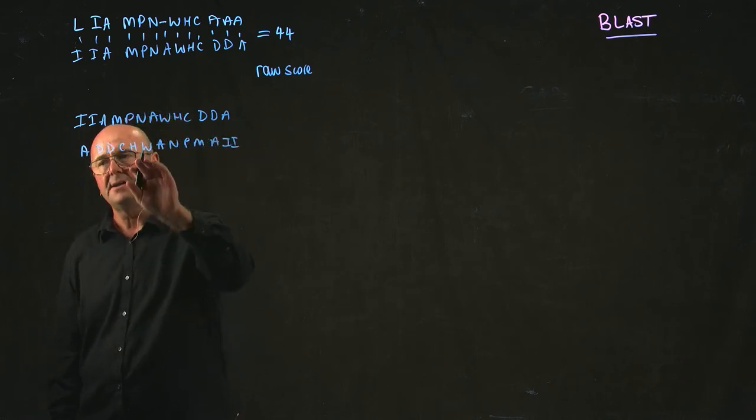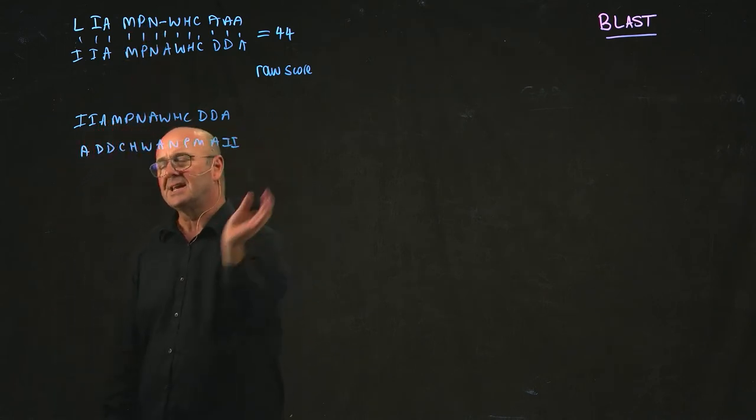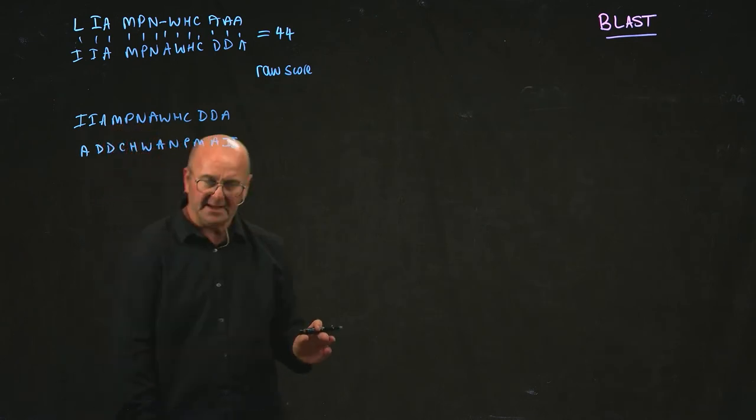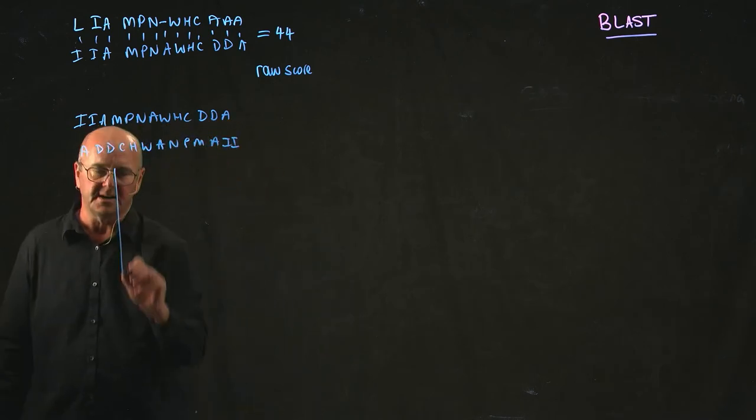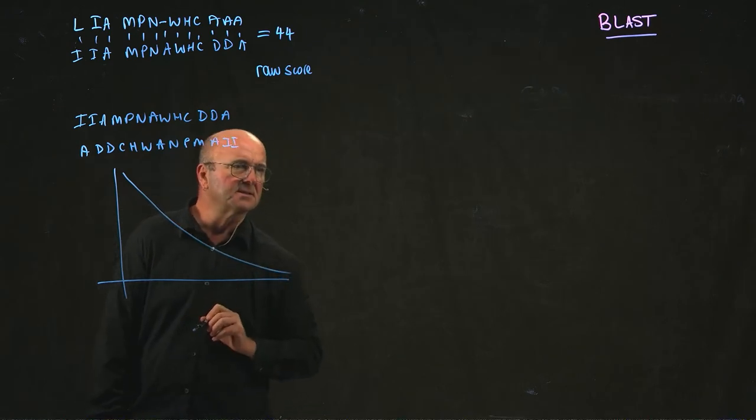We can align this version against the original sequence and calculate the score. We can take all the possible permutations of this sequence—we can do that easily—and calculate what the scores are. If we do that and plot a graph, we're going to get a graph like this.